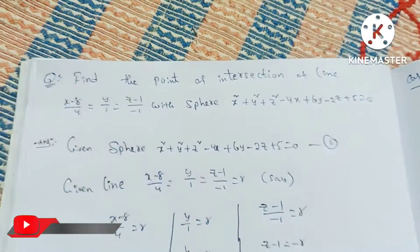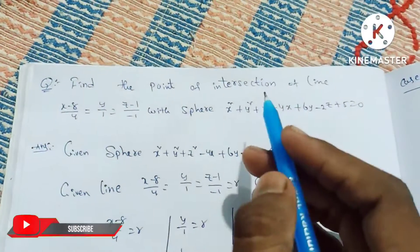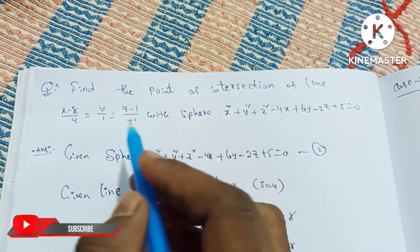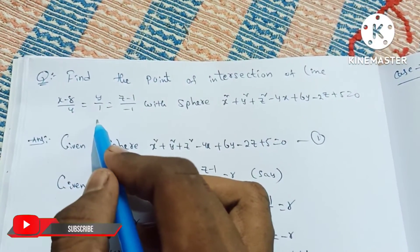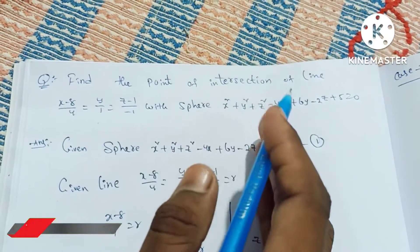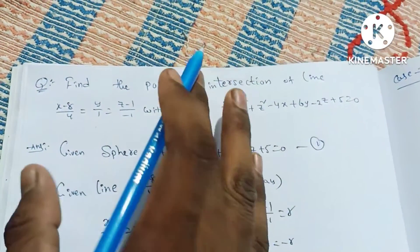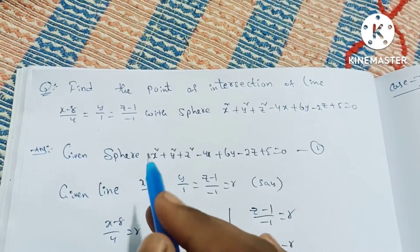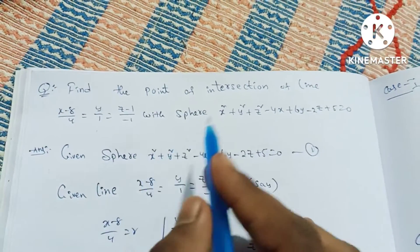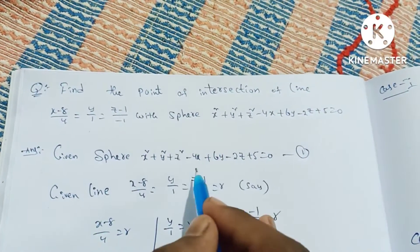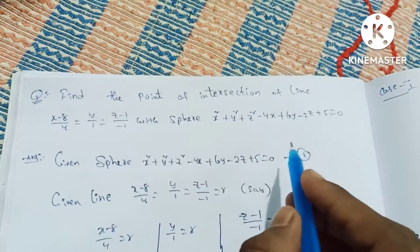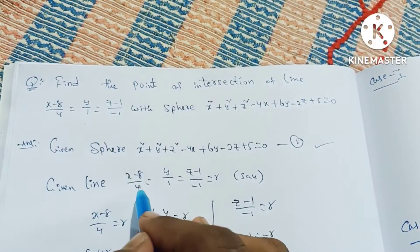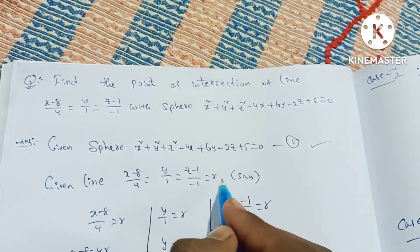Find the point of intersection of a line with a sphere. We have a line equation, a sphere equation, and we have a point of intersection. We have a solution, given sphere and the line equations, we have a sphere, we have a line equation, we have an r equation.